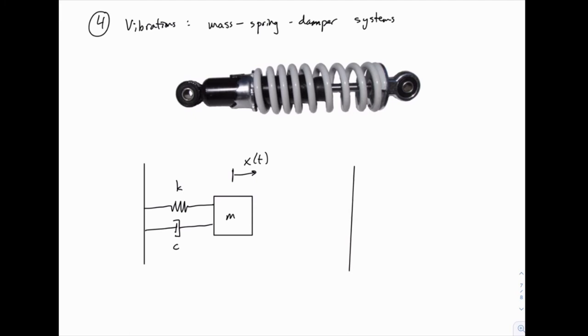So we could draw a graph, for instance, of the position over time. If we started out at some position to the right so x is positive and then we let go, the position would look something like this. Where it would oscillate back and forth, but it would oscillate in a reducing manner, and so the amplitude of that oscillation reduces over time.